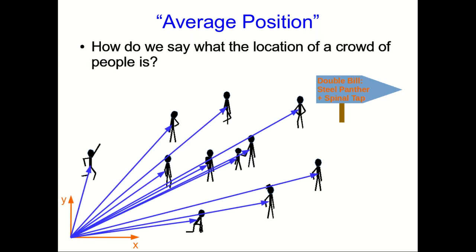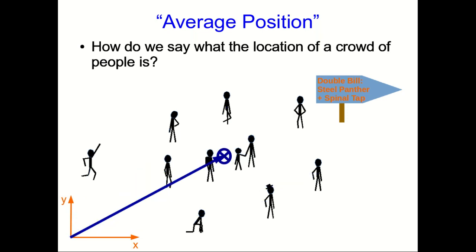You could just keep track of all the individual position vectors of the people, but that's way too much work and totally unnecessary. What you could do is take an average of all those position vectors and get a single position vector that points more or less at the center of the crowd.